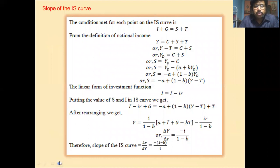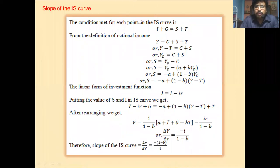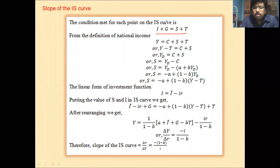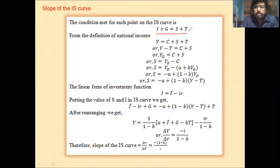Now, the condition that holds for each point on the IS curve — look at the equation. The condition is that investment is equal to saving; investment plus government expenditure equals saving plus tax. This is the goods market equilibrium equation.